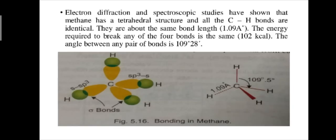In methane, carbon forms single covalent bonds with four hydrogen atoms. Since the carbon atom is attached to four other atoms, it uses sp3 orbitals to form these bonds. Each carbon-hydrogen covalent bond is the result of the overlap of an sp3 orbital from carbon and the 1s orbital from hydrogen.